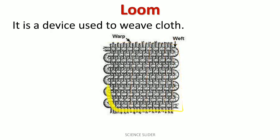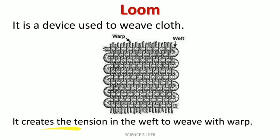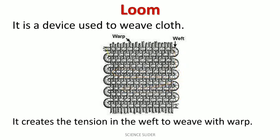The loom creates tension in the weft to weave with the warp. This is the weft — it creates tension in the weft, and through this tension, weaving with the warp is carried out.